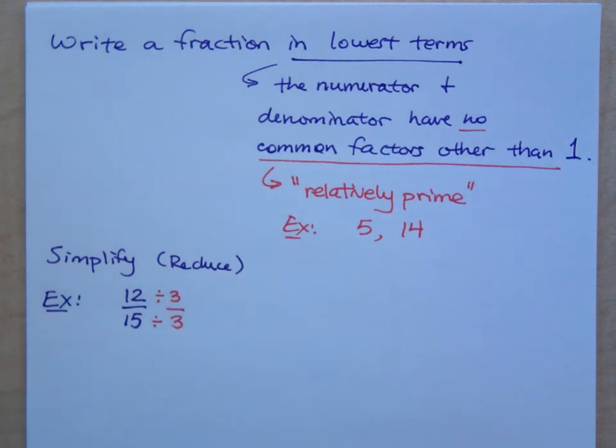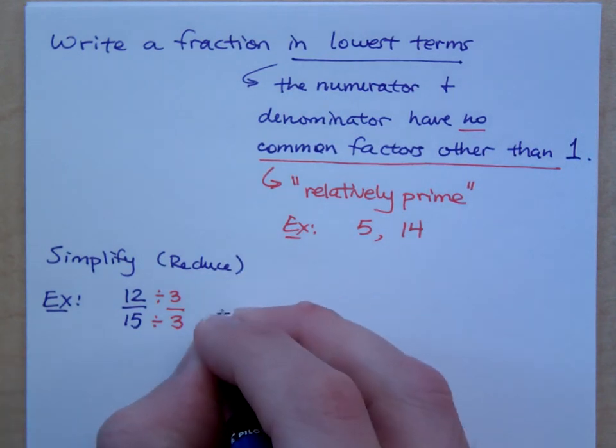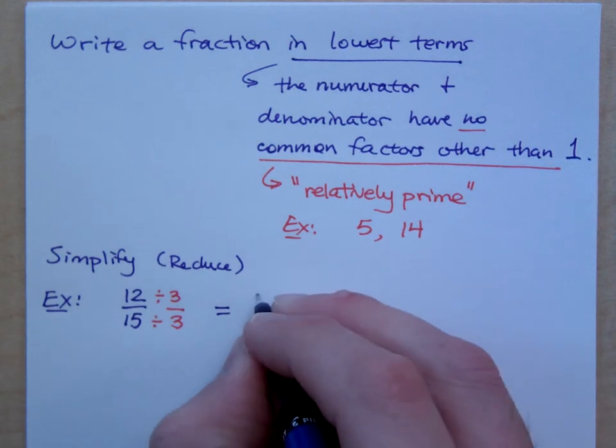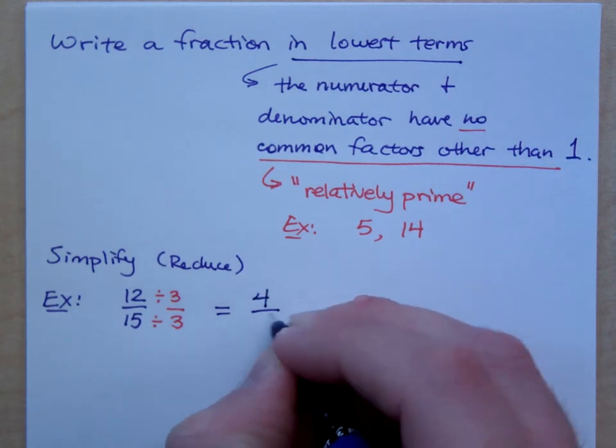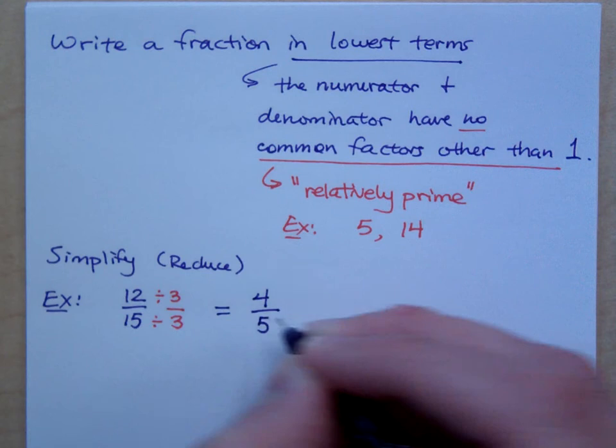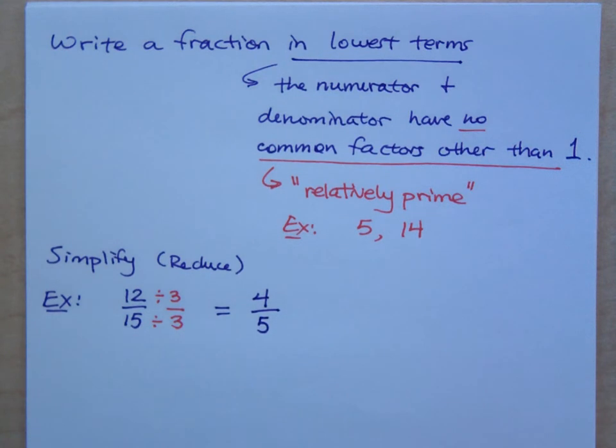Now, are we dividing this fraction by 3? No, we're dividing it by 1. So what's 12 divided by 3? 4. And what's 15 divided by 3? 5. So I'm saying that 12 over 15 is the same as 4 over 5.